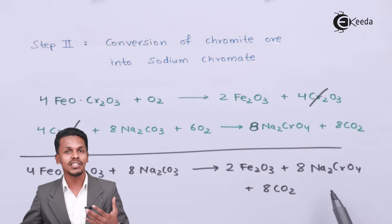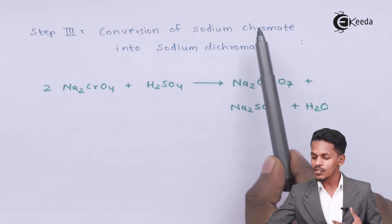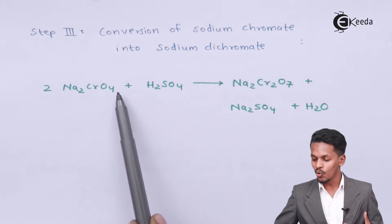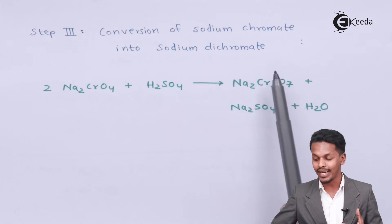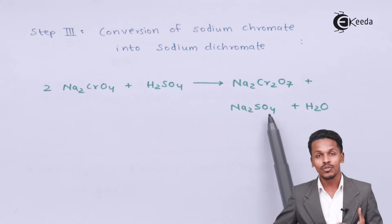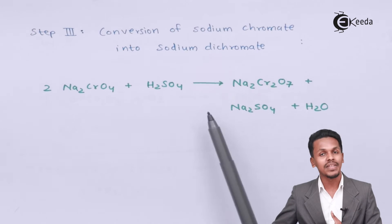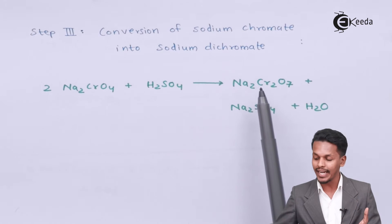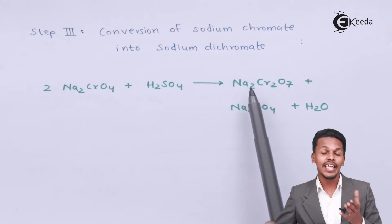Na₂CrO₄ is the main product we need. Step number 3 is conversion of sodium chromate into sodium dichromate. In this step, 2 moles of Na₂CrO₄ is treated with concentrated sulfuric acid. The product obtained is Na₂Cr₂O₇ (sodium dichromate) along with Na₂SO₄ and H₂O. Na₂SO₄ is less soluble and can be filtered out.